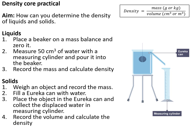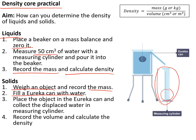In the core practical on density: for liquids, place a beaker on a zeroed mass balance, measure 50 cm³ of water using a measuring cylinder, pour it in and record the mass, then calculate density = mass ÷ volume. For solids, weigh the object and record the mass, then fill a eureka can with water and submerge the object — the water displaced into a measuring cylinder gives the volume of the object. Then calculate density = mass ÷ volume.